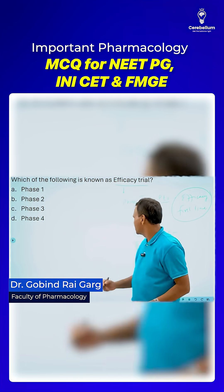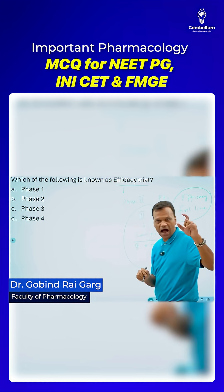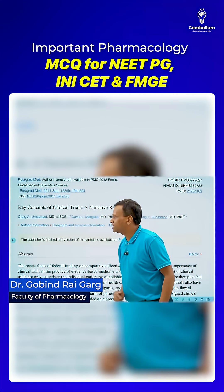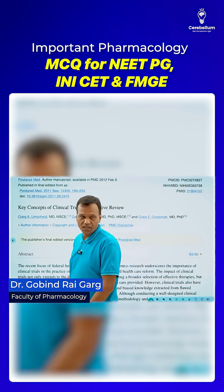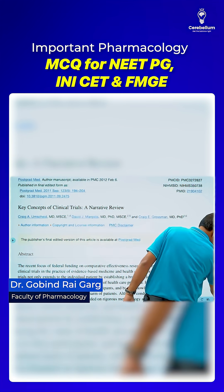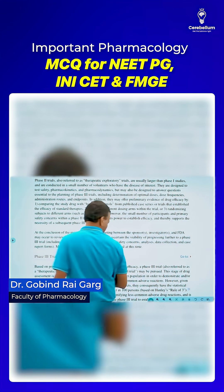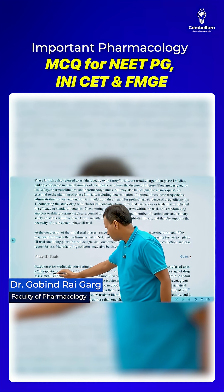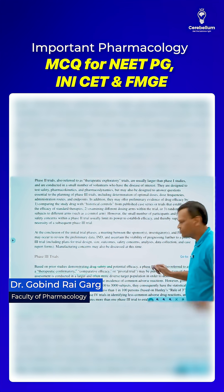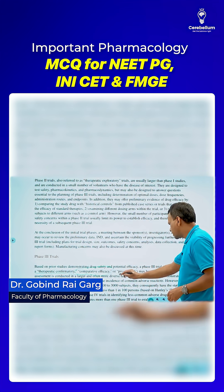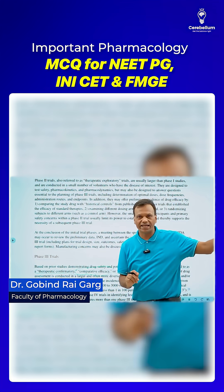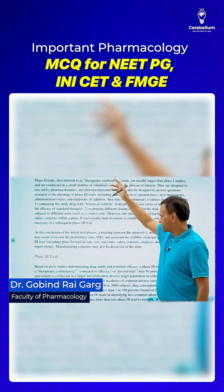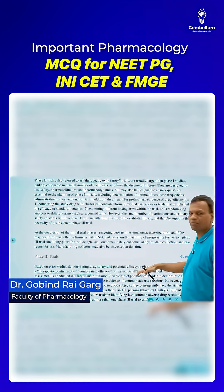So if they specifically ask which is the efficacy trial, the answer is phase three. Phase three trials are known as efficacy trials. In fact, according to the Postgraduate Medical Journal, phase three trials demonstrate drug safety and potential efficacy, also referred to as therapeutic confirmatory or comparative efficacy trials. The other name is pivotal trial. Phase two trials are not called efficacy trials — they are called therapeutic exploratory trials. So phase two is therapeutic exploratory; phase three is comparative efficacy, therapeutic confirmatory, or pivotal.